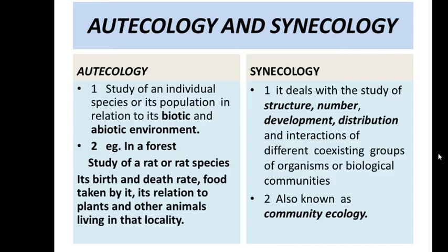Ecology is broadly divided into two branches: Autecology and Synecology. Autecology is the study of an individual species or its population in relation to its biotic and abiotic environment.